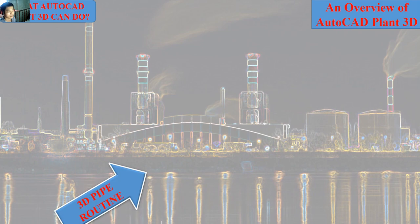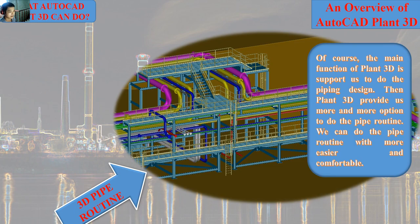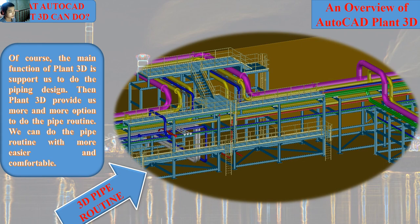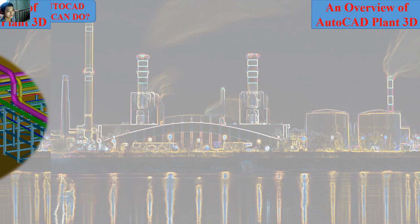Number four is preparing the 3D model of pipe routing. Of course, the main function of Plant 3D is to support us in doing piping design. Plant 3D provides more and more options to do pipe routing in an easier and more comfortable way.